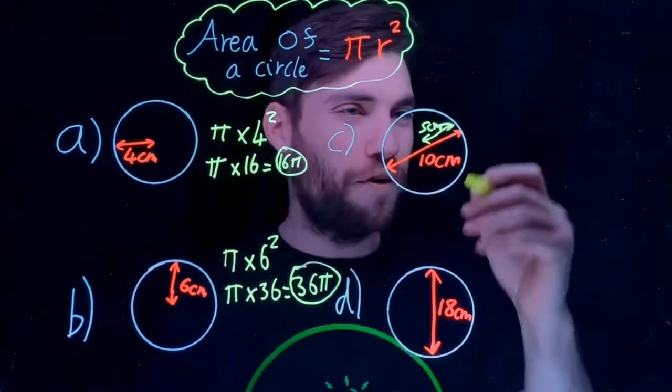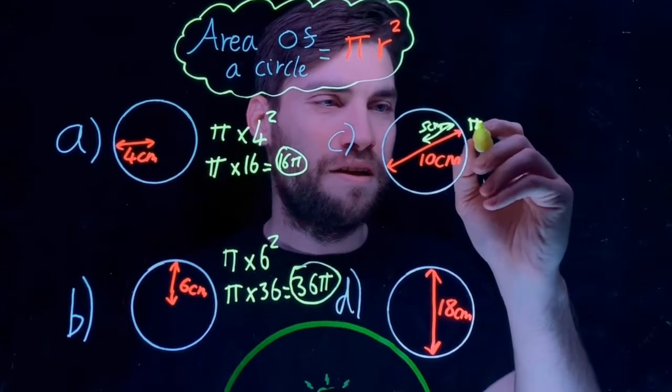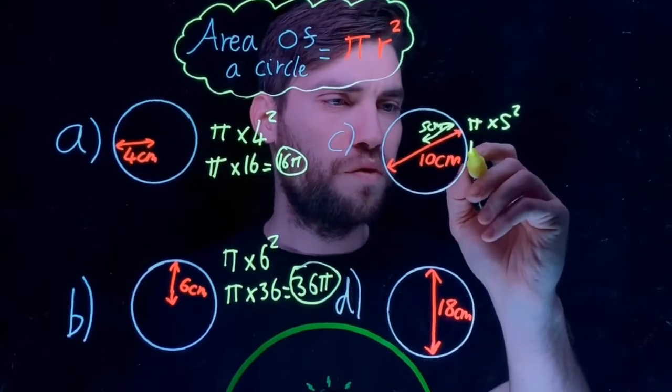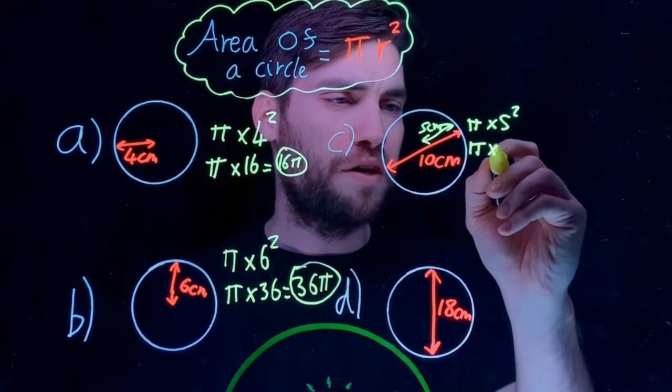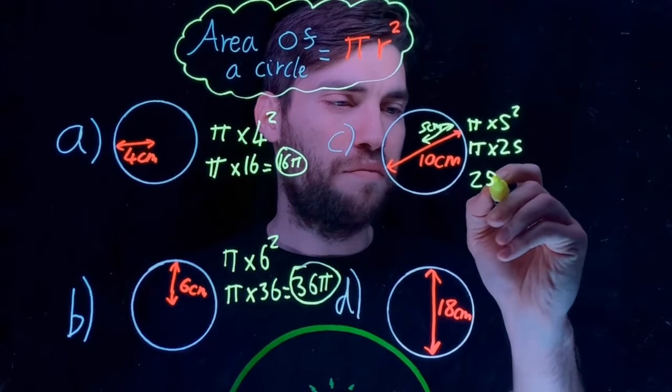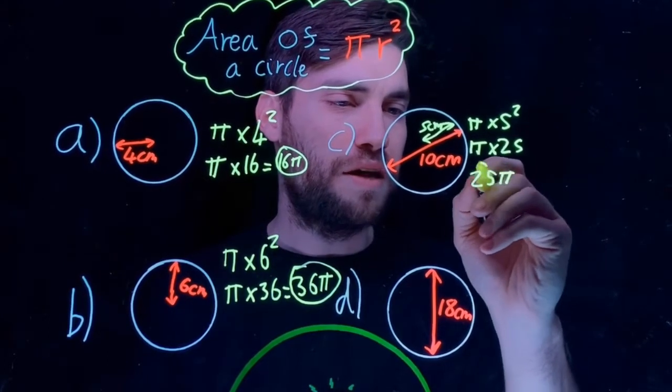So we do exactly what we were doing before. We do π multiplied by 5 squared, which would be π times 25. That equals 25π. And that is our answer for this one.